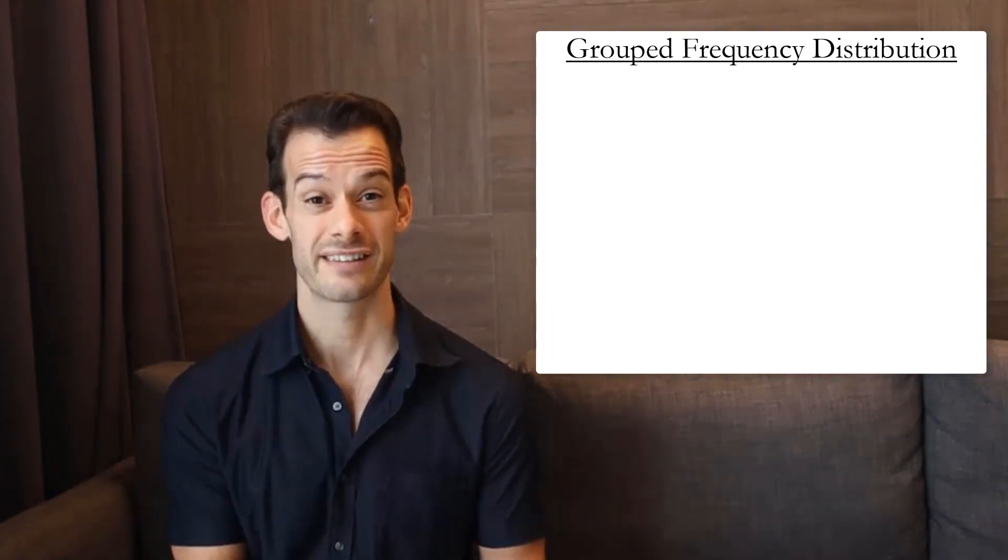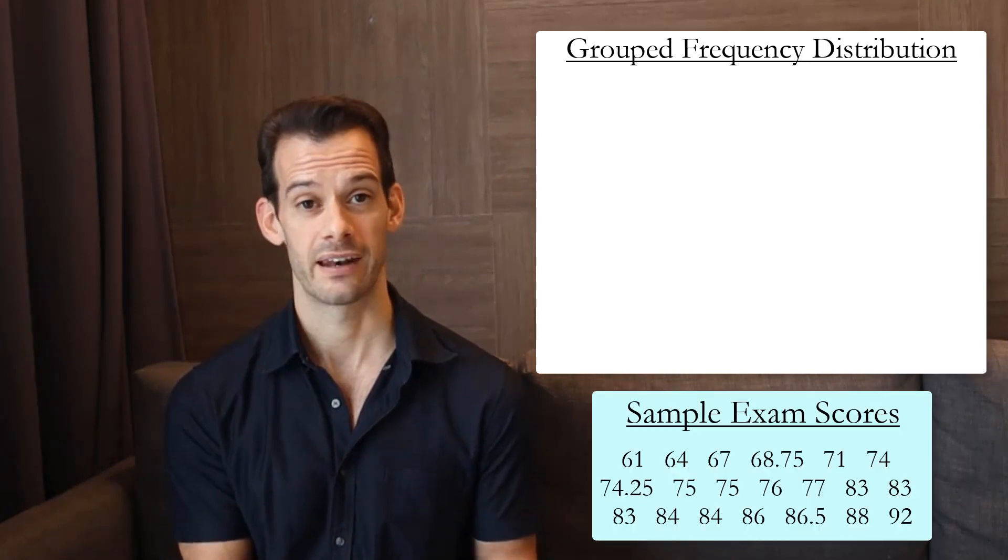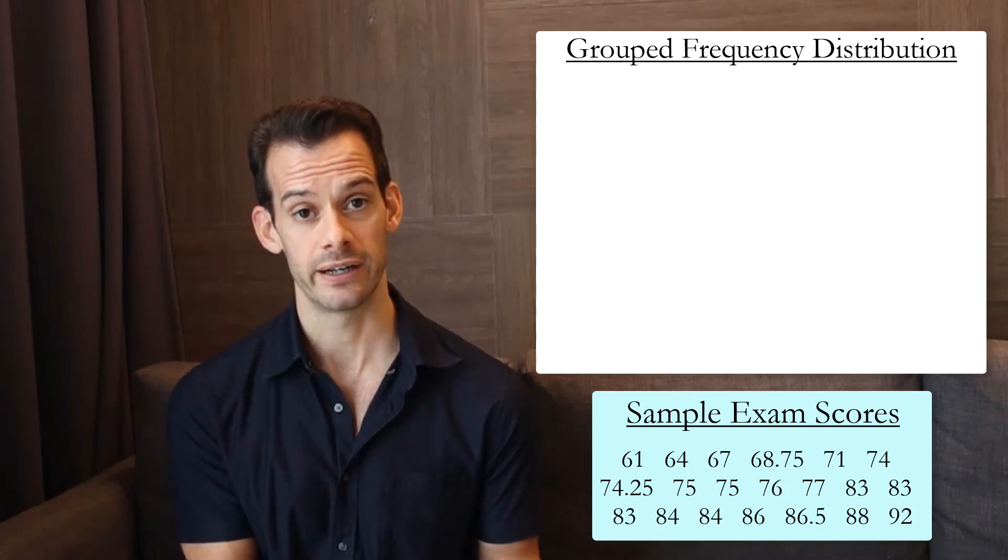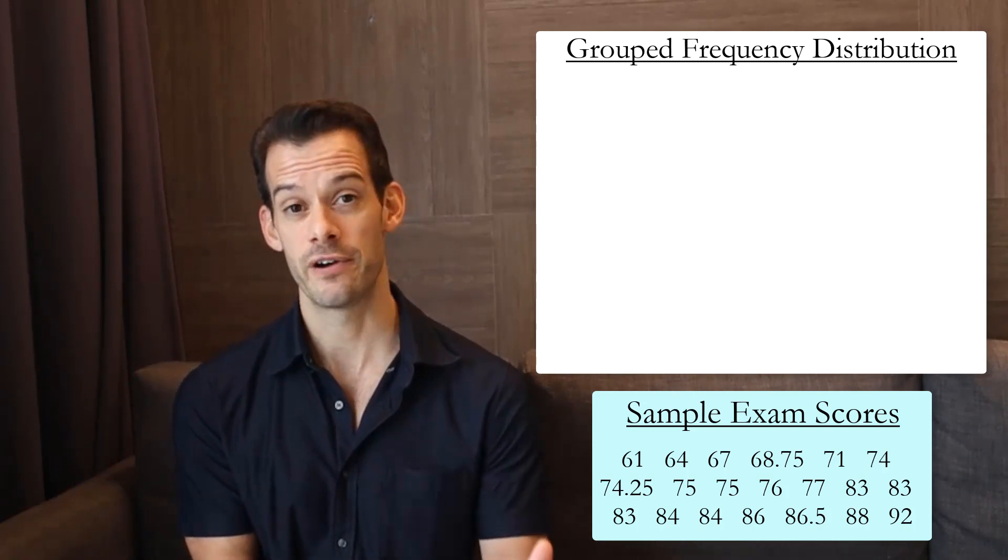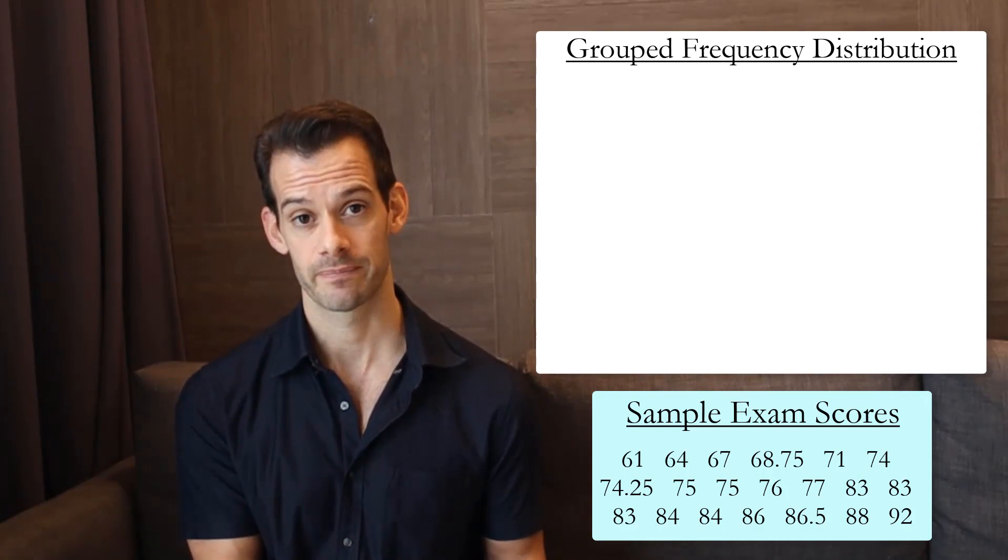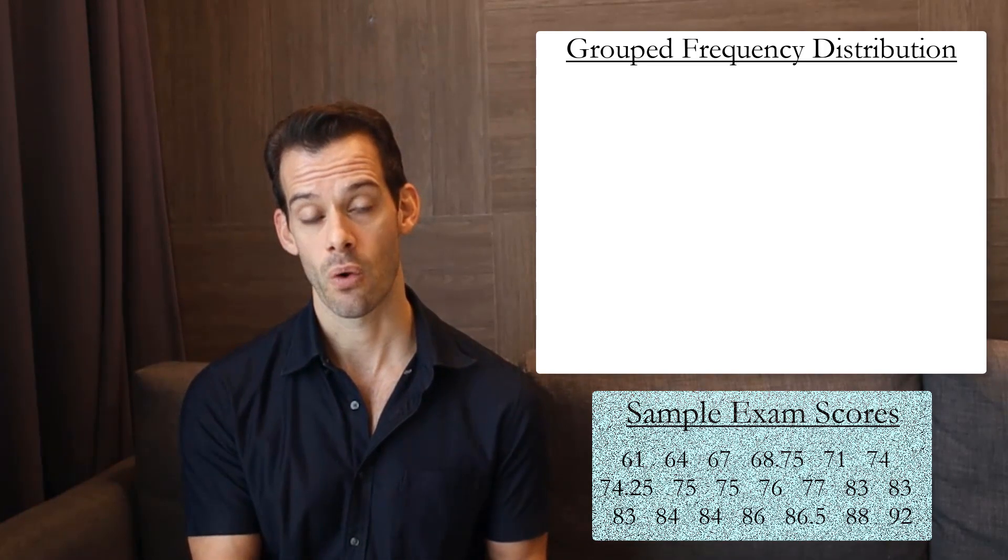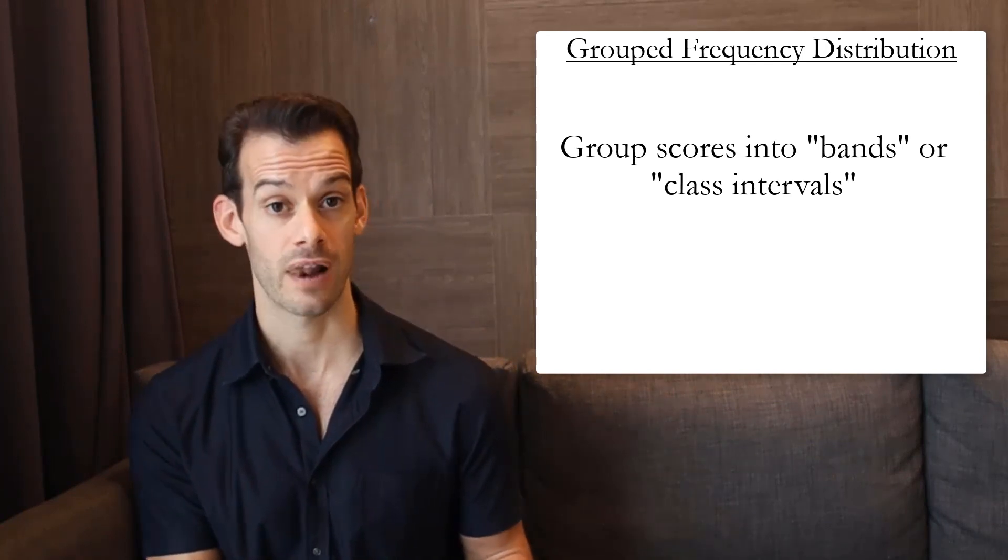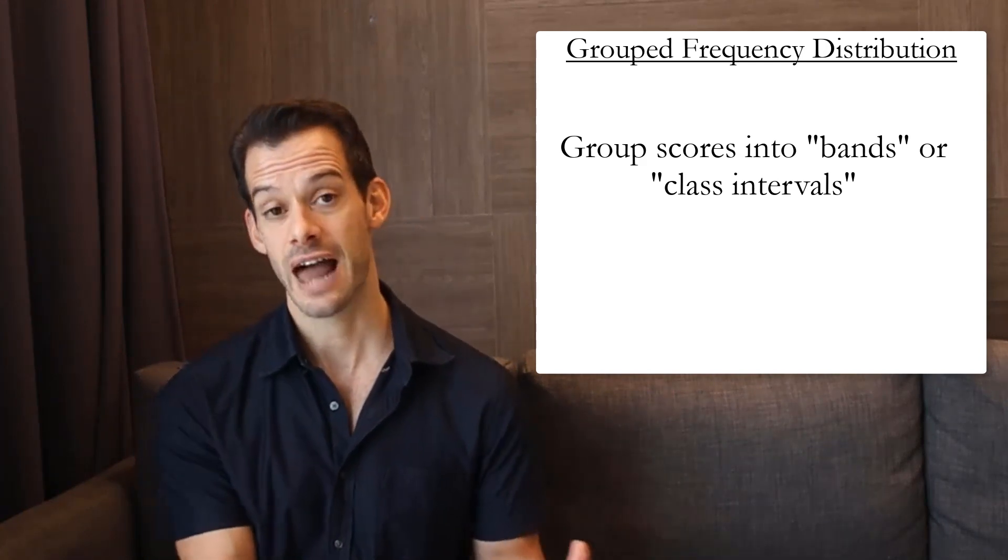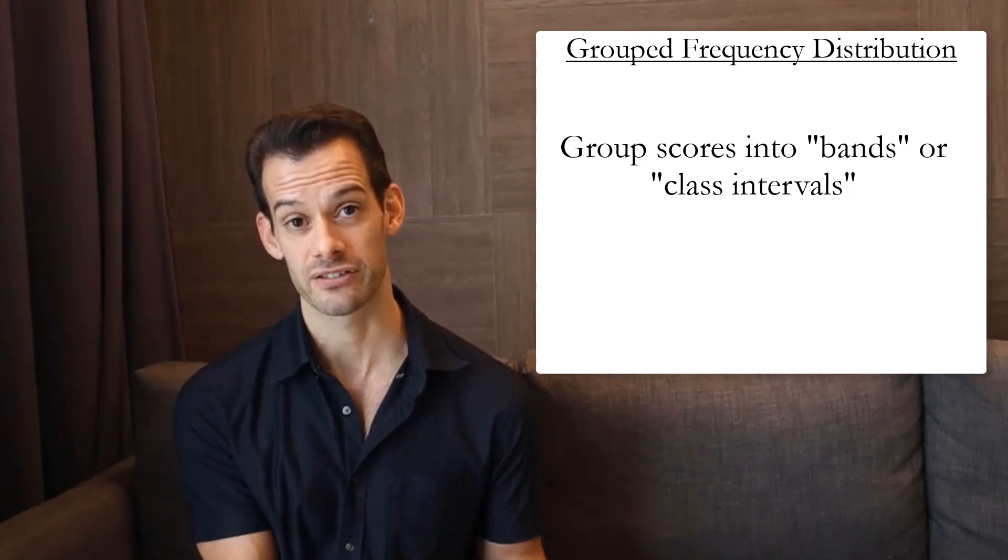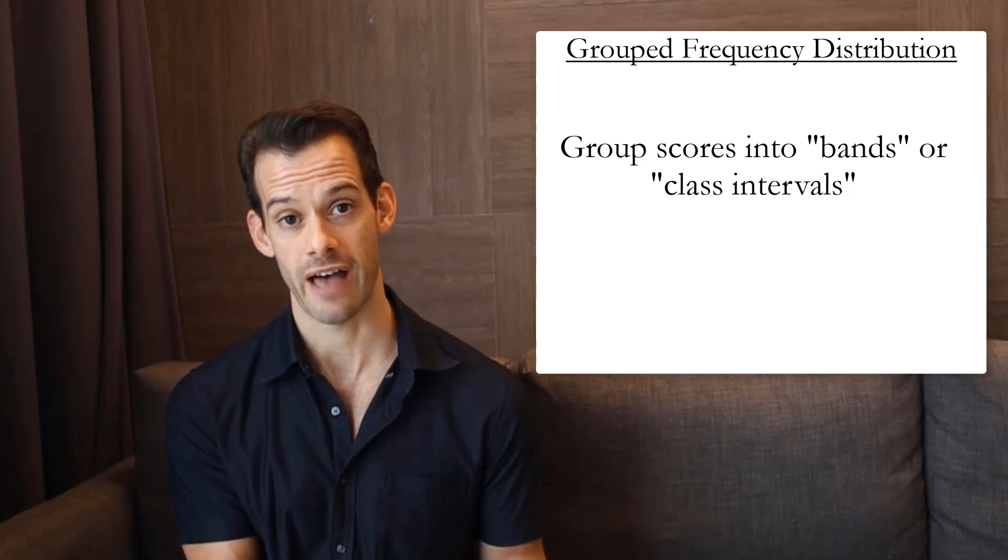Let's say that we have a sample of exam scores and they range from 61 up to 92. So that's a range of 31 and that means we need to have 32 rows in our table in order to present each possible value for x. This is impractical so what we're going to do is we're going to group scores together into what are called bins or class intervals. Then each class interval will have a row in the table but that will represent multiple possible scores for x rather than each individual value.